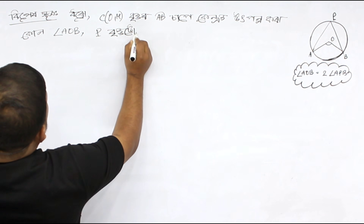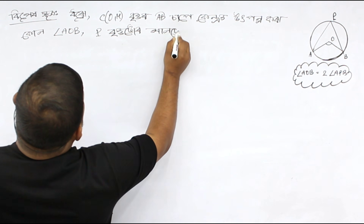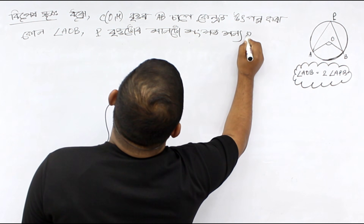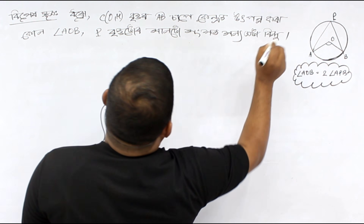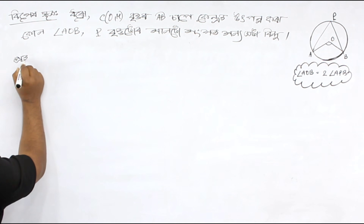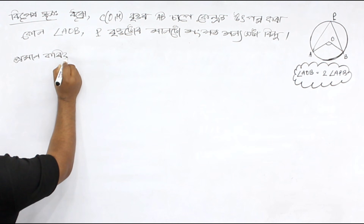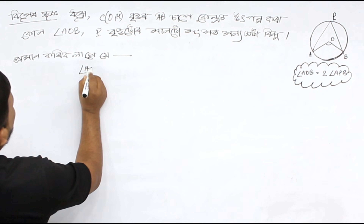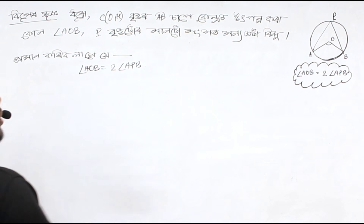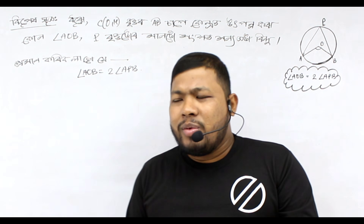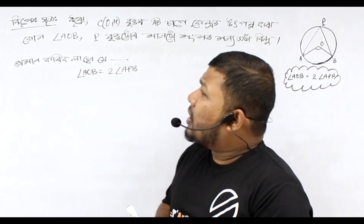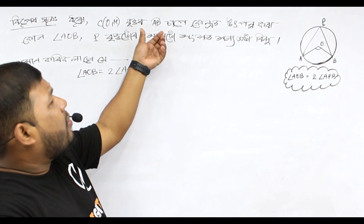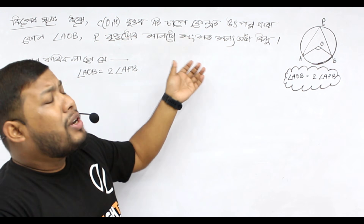On the circle, at the circumference angle, at another point on the circle — the inscribed angle. We will write this in English. Let C(O,r) be a circle and arc AB form angle AOB at the center. P is any point on the other part of the circle. We need to prove that angle AOB equals twice angle APB.